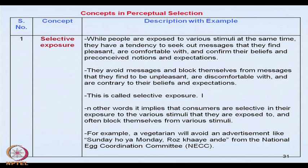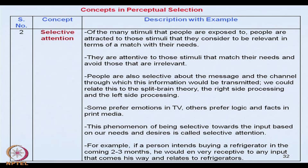Selective attention is another concept in perceptual selectivity. People generally are exposed to many stimuli; they will be attracted to those stimuli which are relevant in terms of their need. So they are attentive to stimuli which they feel relate to their needs, and avoid those which are irrelevant. For example, if a person intends to buy a refrigerator in the next two or three months, he would be very receptive to any and every advertisement on TV which relates to refrigerators. People are also selective about the message and the channel through which information is transmitted — some people prefer emotions on TV, others prefer logic and rationality in print media.